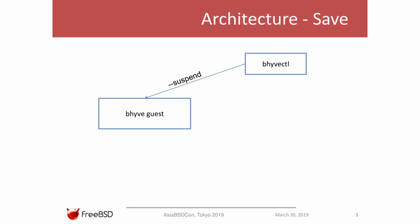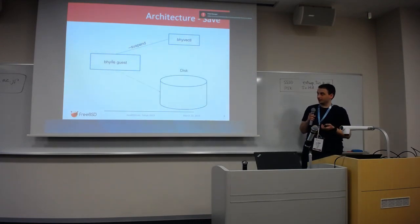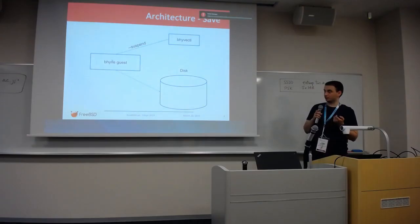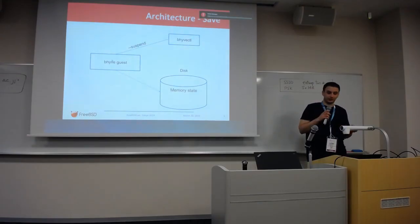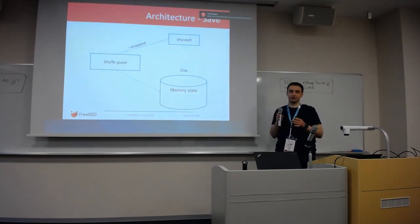At some point you want to create a snapshot. To do that, you use the Bhyve control utility with a --suspend option, and this will communicate with the main Bhyve thread — a separate Bhyve thread in the main program — using a Unix socket to receive the command. This causes Bhyve to stop the virtual machine and start saving state to disk, first saving the entire guest memory by literally copying it using memcpy.